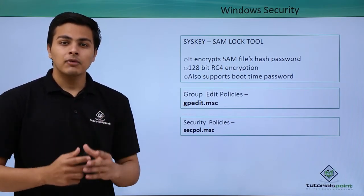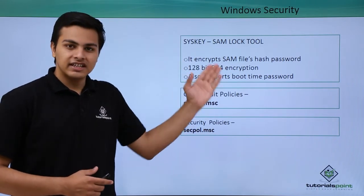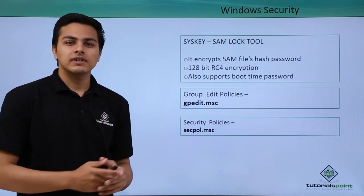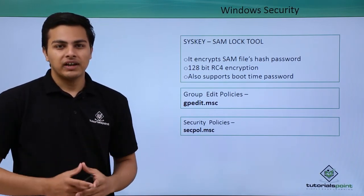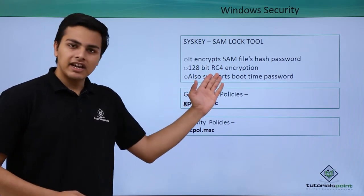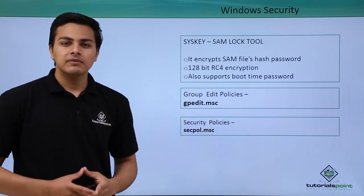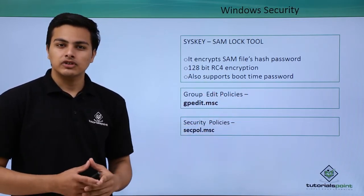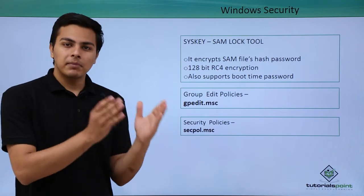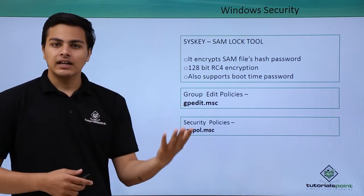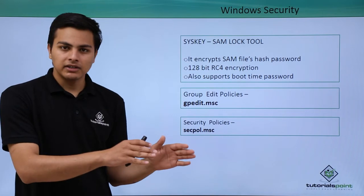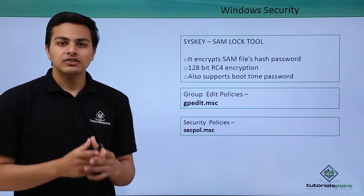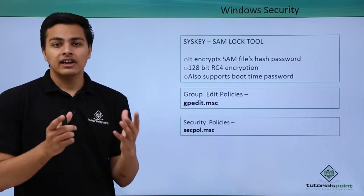There is a small utility in Windows called syskey, which stands for System Key. With the help of this utility we can encrypt the passwords present inside the SAM file. Syskey supports 128-bit RC4 encryption. By using syskey we can also add one more boot-time password to protect our Windows operating system, so when we start our system we first have to enter our user password, then the syskey password, before we can log in.